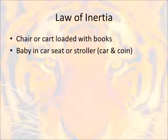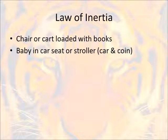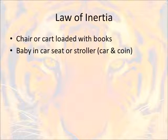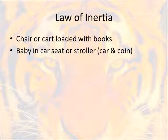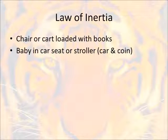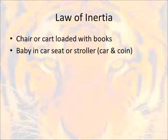A lot of teachers like to use a baby in a car seat example, or they'll set a toy baby in a stroller. A lot of teachers will do a toy car with a coin sitting on top — it's the same idea. If you put a coin on top of a toy car and get it going really fast in a straight line, inertia says both the coin and the car want to keep going forever. But if the car crashes and stops, the coin keeps flying — it keeps moving in that straight line. It has inertia and doesn't want to change.